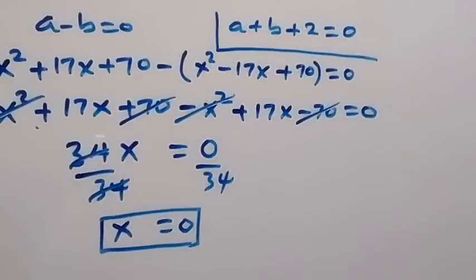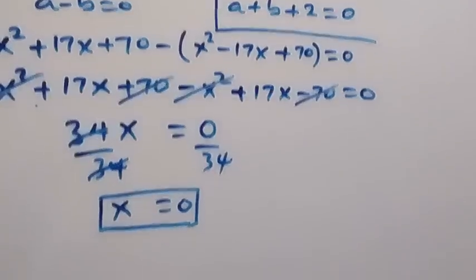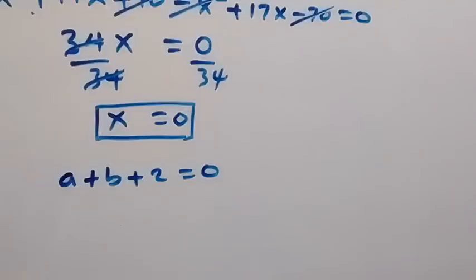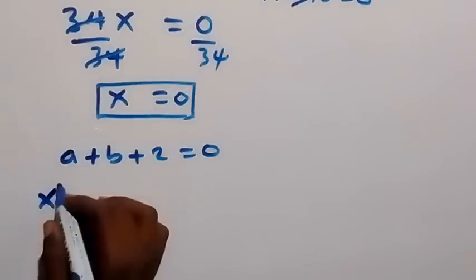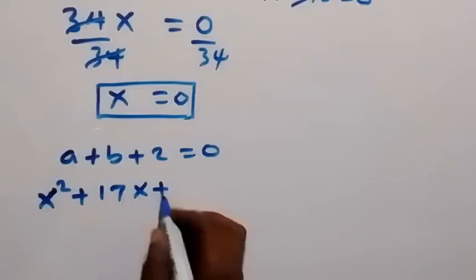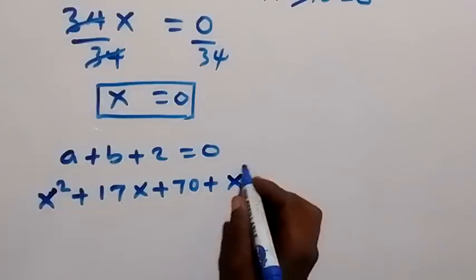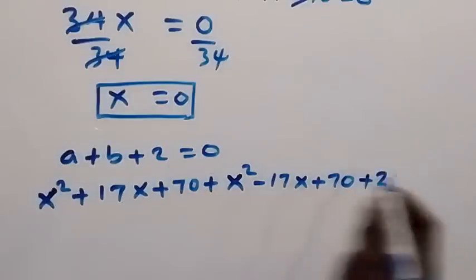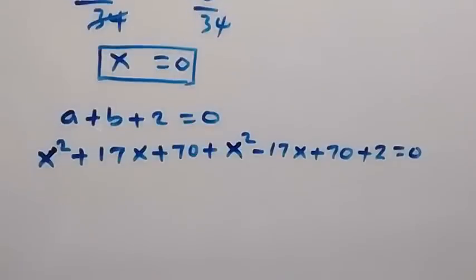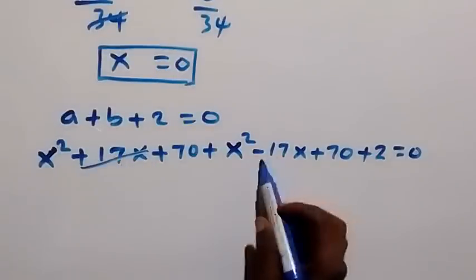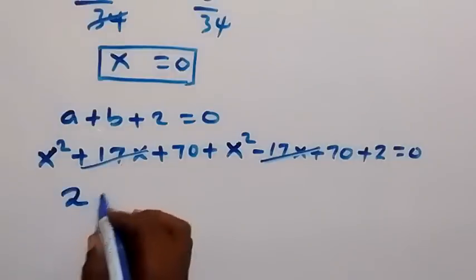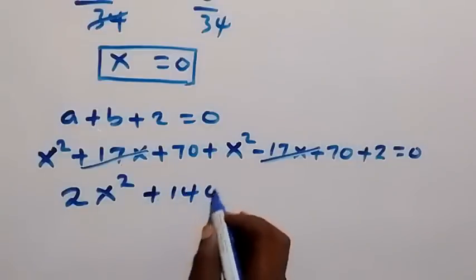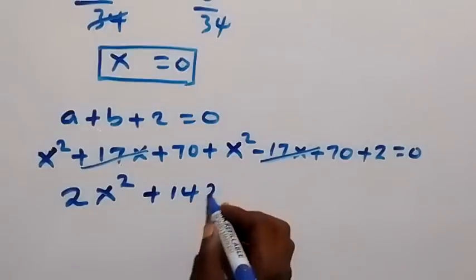Now working on the second case: a plus b plus 2 equals 0. Substituting a as x squared plus 17x plus 70 and b as x squared minus 17x plus 70, then plus 2, equals 0. The 17x and minus 17x cancel, giving 2x squared plus 70 plus 70 plus 2, which is 2x squared plus 142 equals 0.